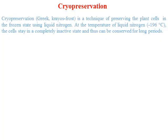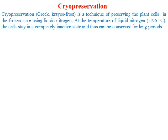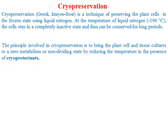Cryopreservation is the most effective way to conserve the germplasm. The name 'cryo' means frost. It is a technique in which we conserve plant cells or germplasm in a frost condition using liquid nitrogen. At this temperature — liquid nitrogen at minus 190 degrees Celsius — all the metabolic activity of the plant stops and the plant stops dividing, so that we can conserve it for a long period of time. During cryopreservation, to prevent damage or shock to the plant, we use a cryoprotectant.